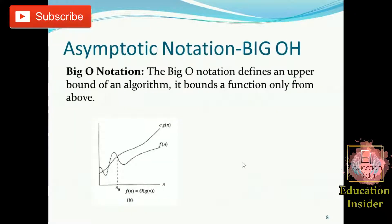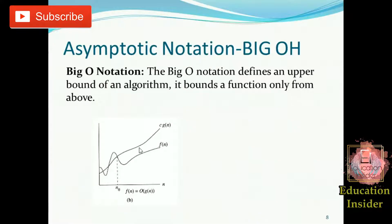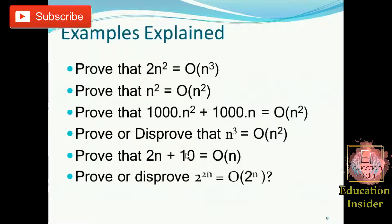As discussed in the previous video, Big O notation identifies the upper bound and hence bounds the function f(n) from above. We say it is a tight upper bound. As you can see in this graph, f(n) is bounded by c·g(n). Let's carry on with some examples.